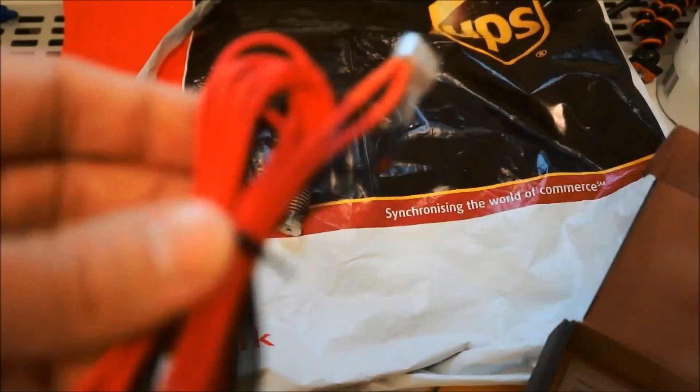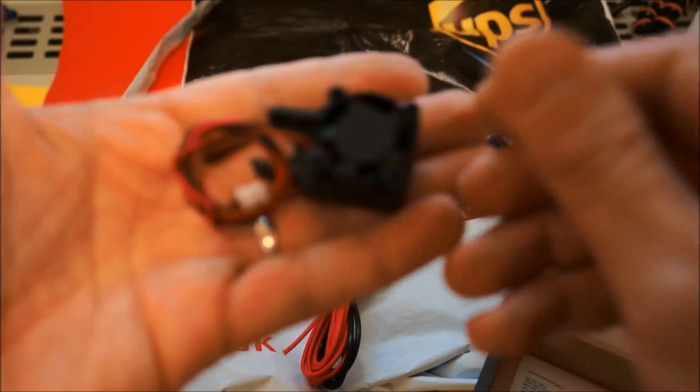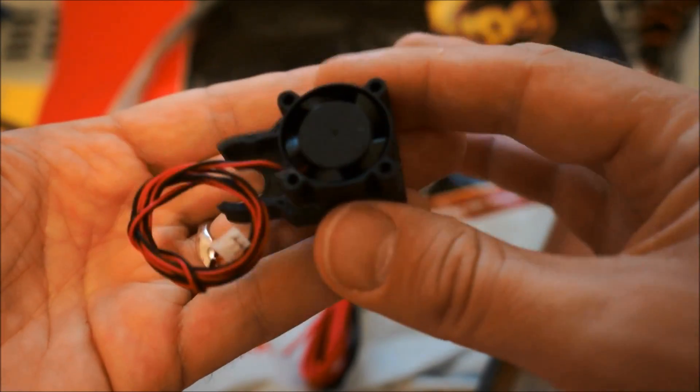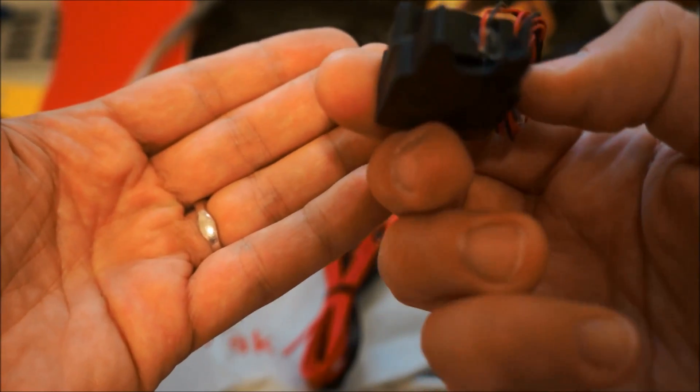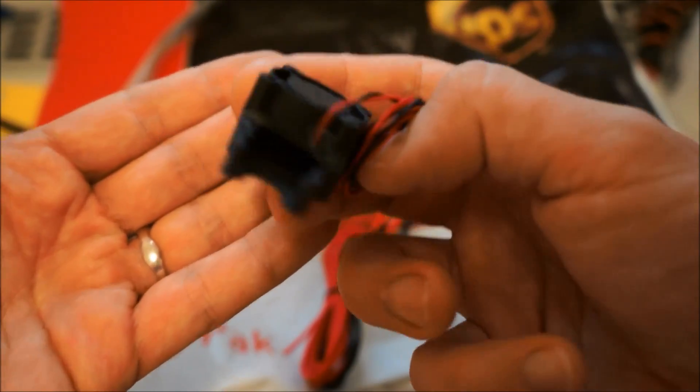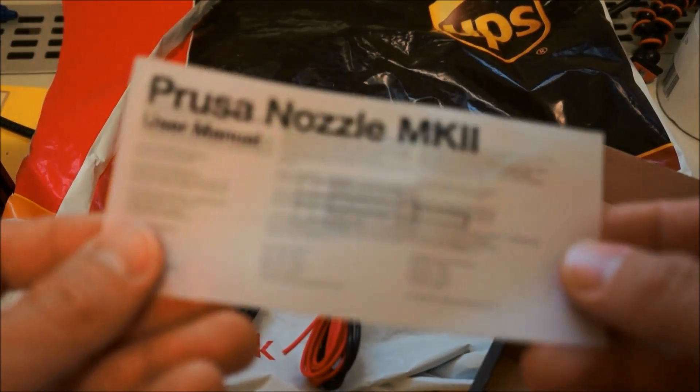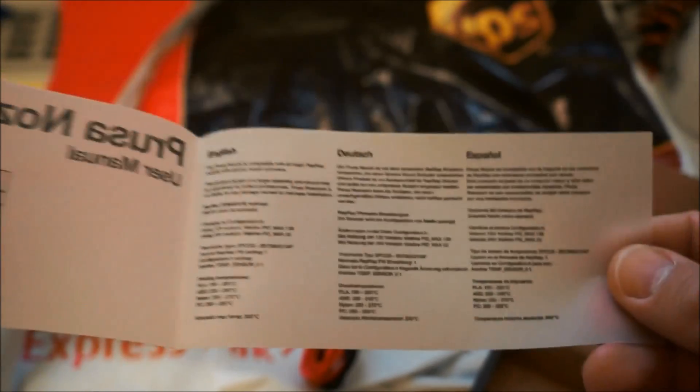We also get a fan mounted on a printed block. This is supposed to be on the head all the time, making it stable for printing PLA. And then we have the Prusa nozzle Mach 2 user's manual, which is pretty short.